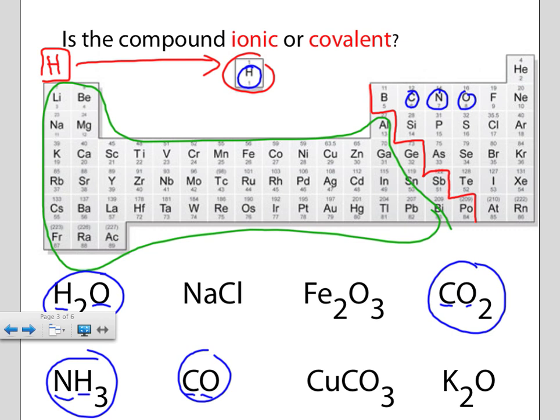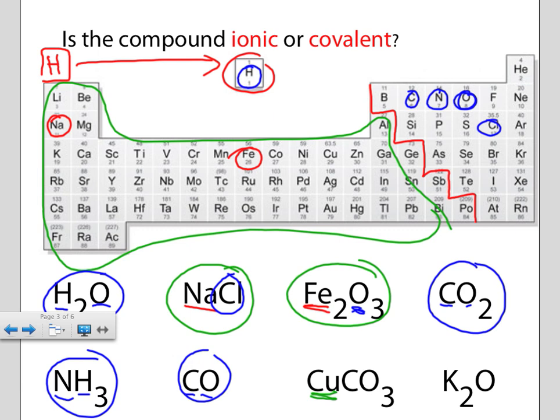We have sodium — it is a metal bonded with chlorine, a non-metal, so we're going to call this an ionic compound. Here's iron. Where do we find iron on the periodic table? Here it is — it's a metal, a transition metal. It is bonded with oxygen, a non-metal, so this is definitely ionic. Same here — here's copper, a metal. And here we have carbon and oxygen, both non-metals. And lastly, potassium — a group 1 metal — bonded with oxygen, a common non-metal, so that is also ionic.